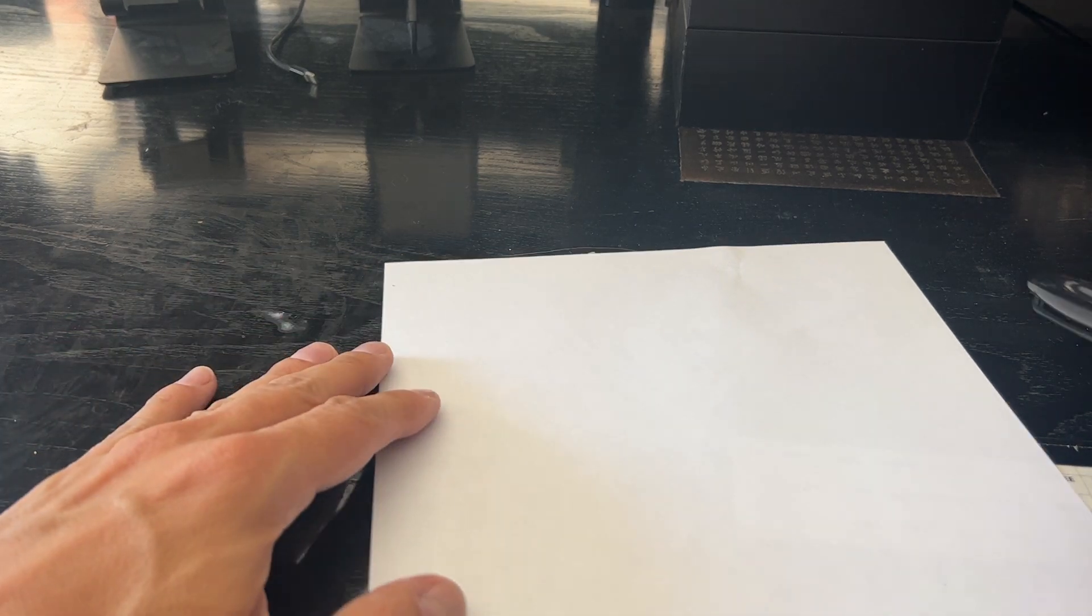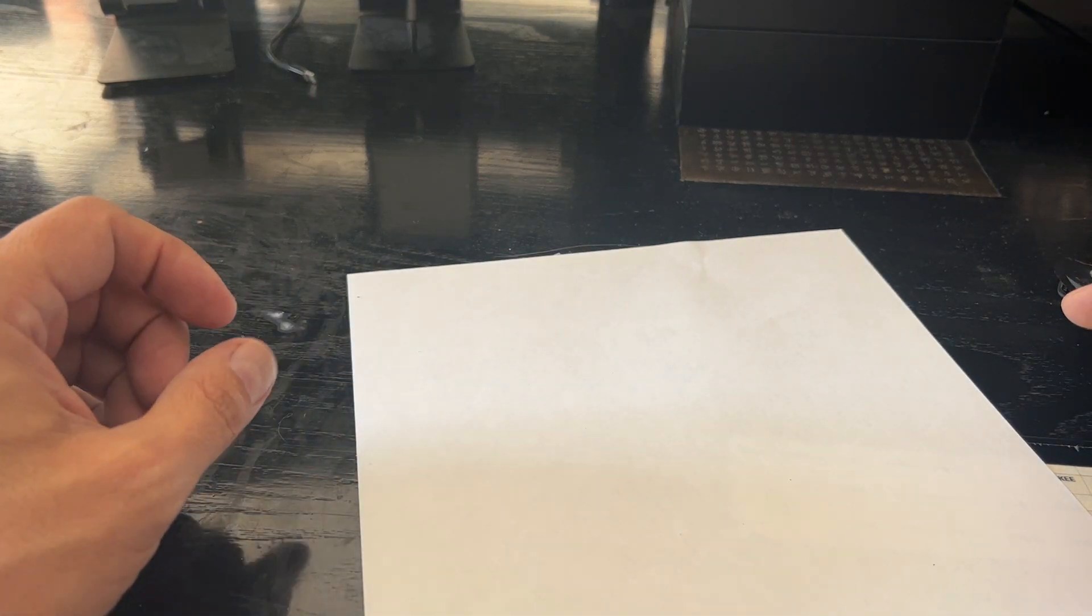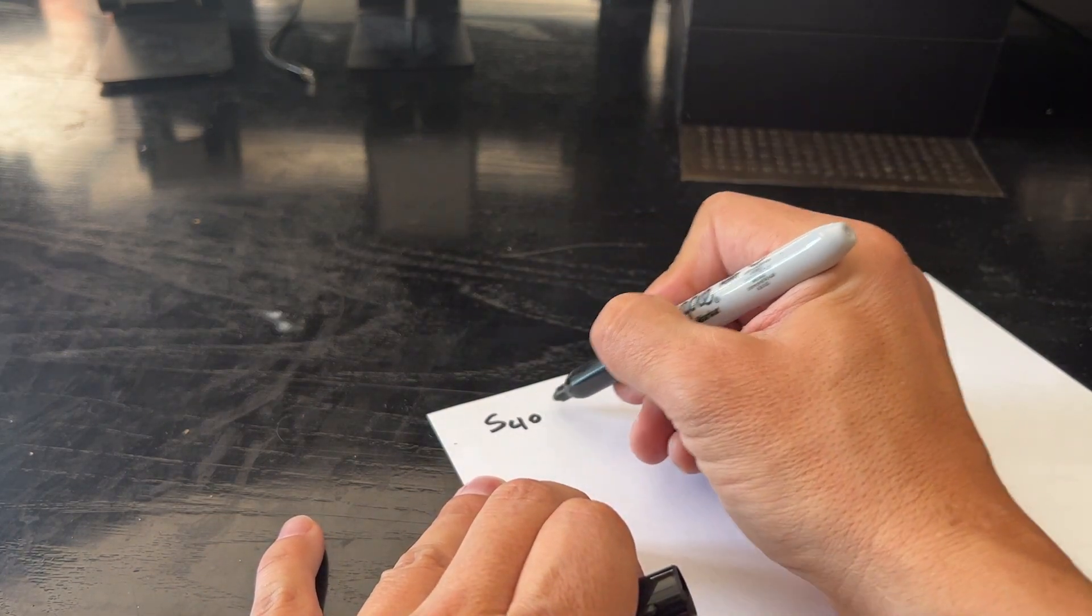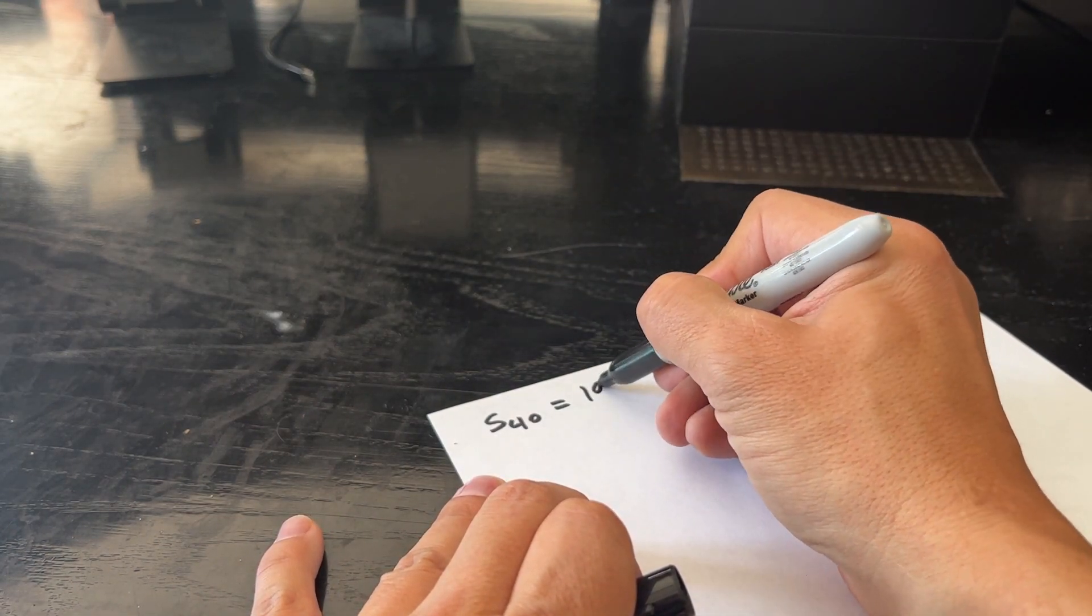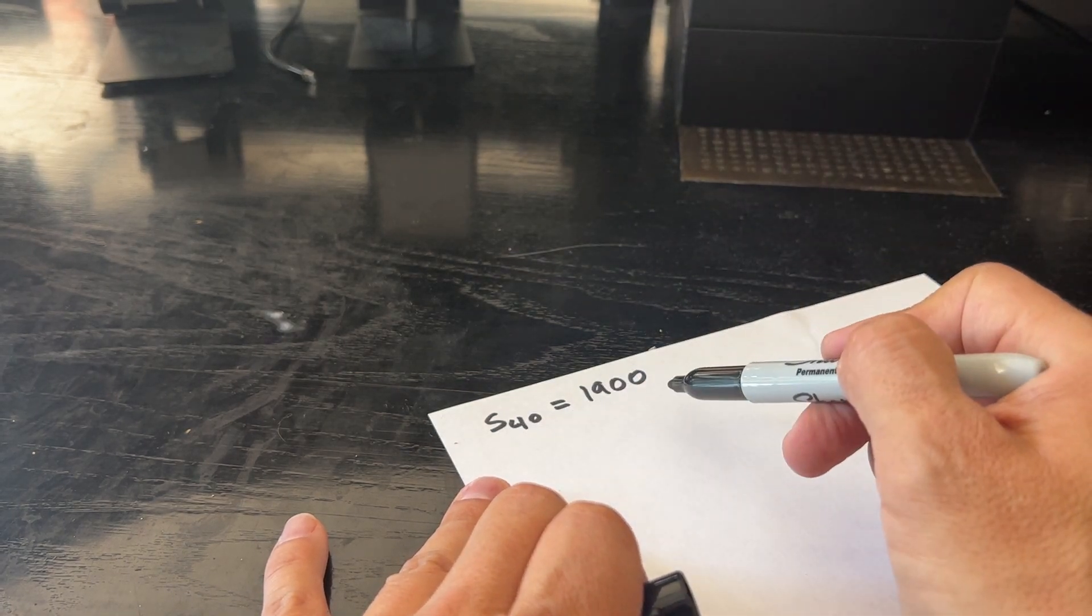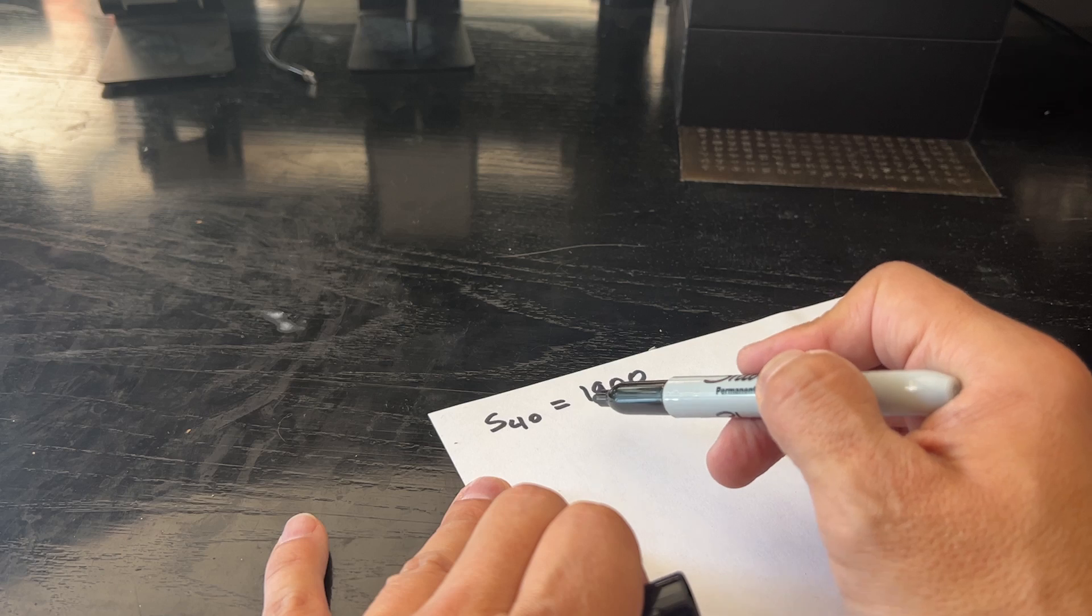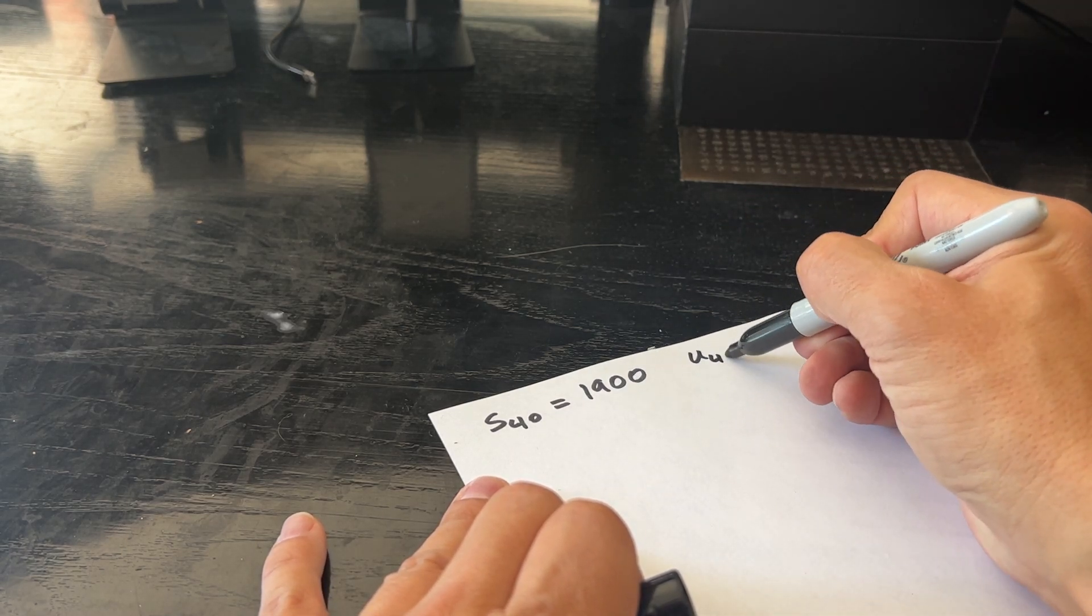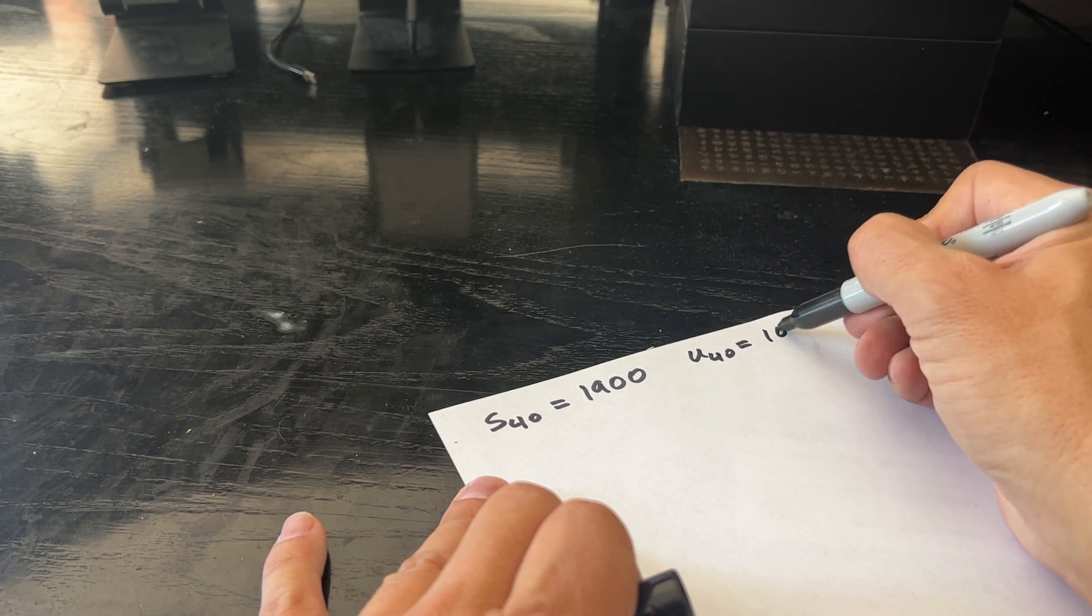All right, so this problem reads in an arithmetic sequence where S40 equals 1,900, meaning that the first 40 terms in this arithmetic sequence added together adds up to 1,900. And second, the 40th term, so U40, is 106.